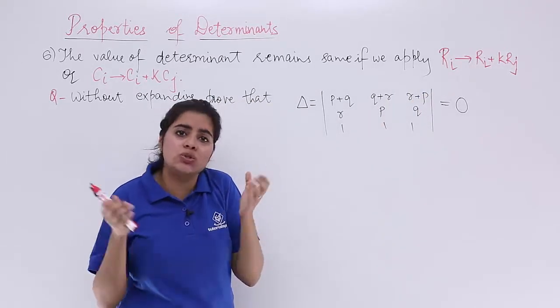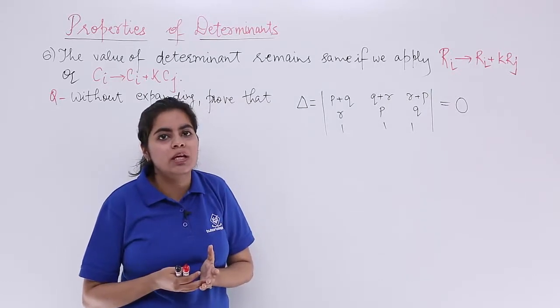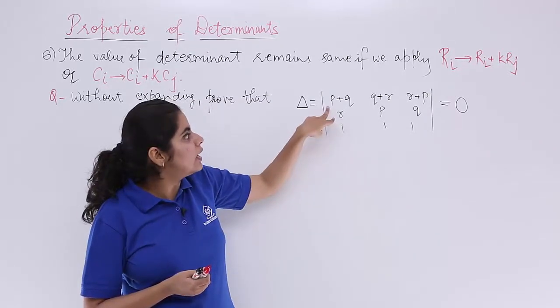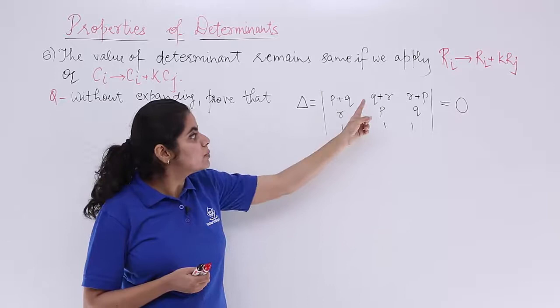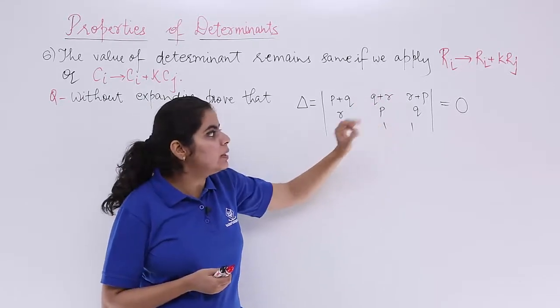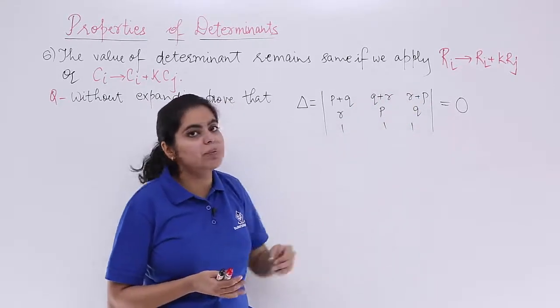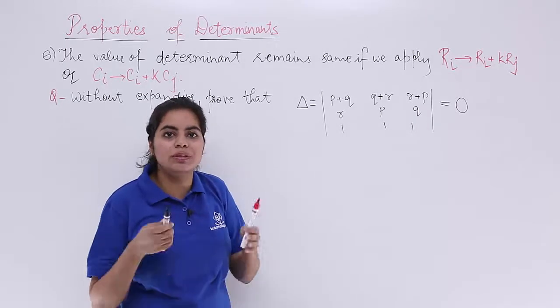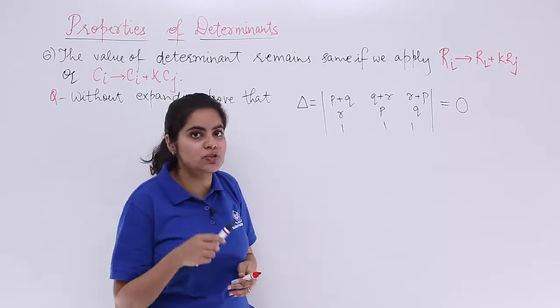So that means if you want these things together, what to do? If you add these things, if you add R1 and R2, it becomes P plus Q plus R, again P plus Q plus R, again P plus Q plus R. That is what we are going to do. That is the essence of this question to solve.